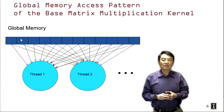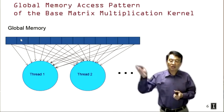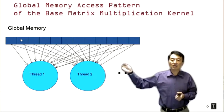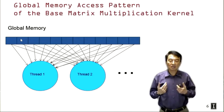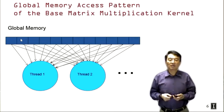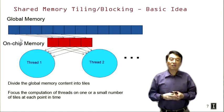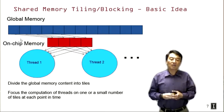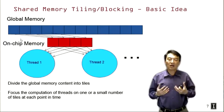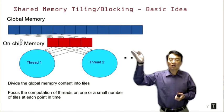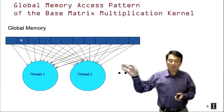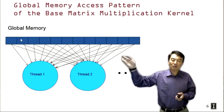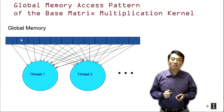Each thread is accessing global memory, and these threads are accessing the same global memory locations perhaps at different times — creating redundant accesses that congest the memory system. The basic idea of using shared memory in a tiled or blocked algorithm is that we try to load each memory location only once into the on-chip memory, which in this case is the shared memory.